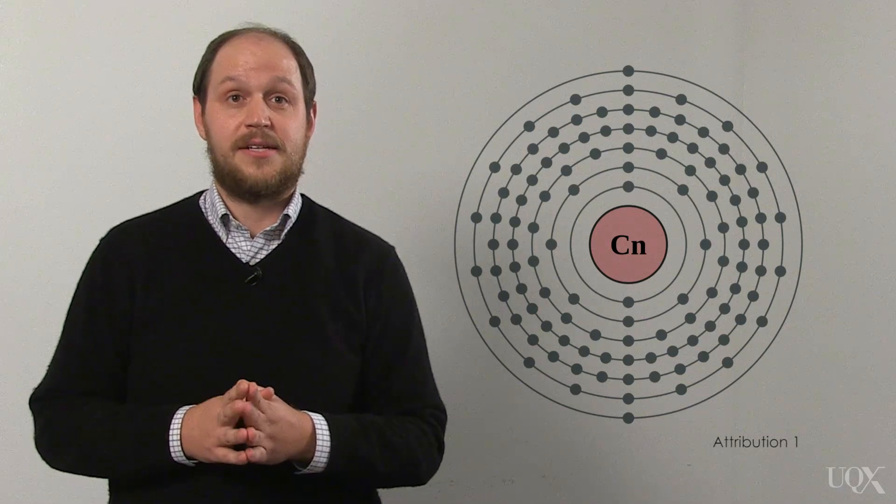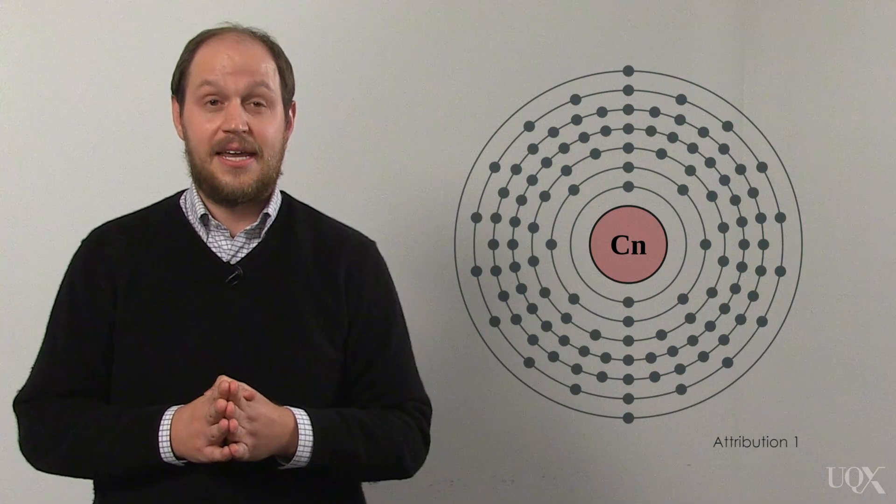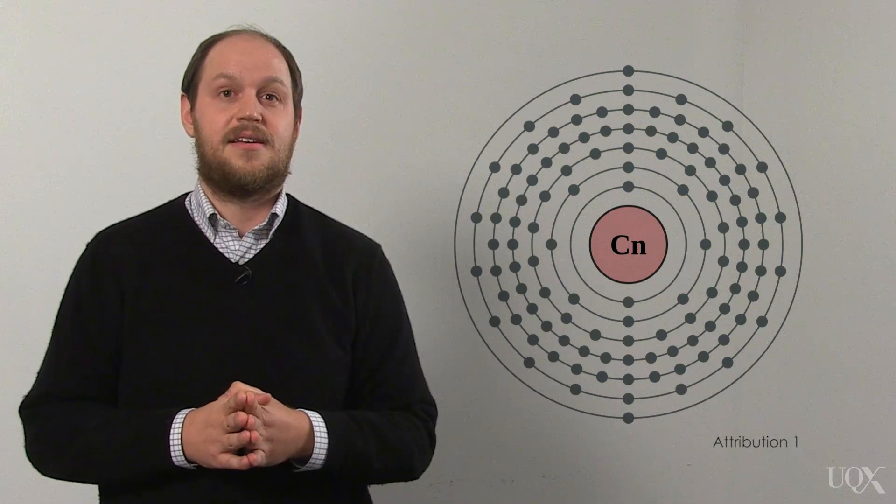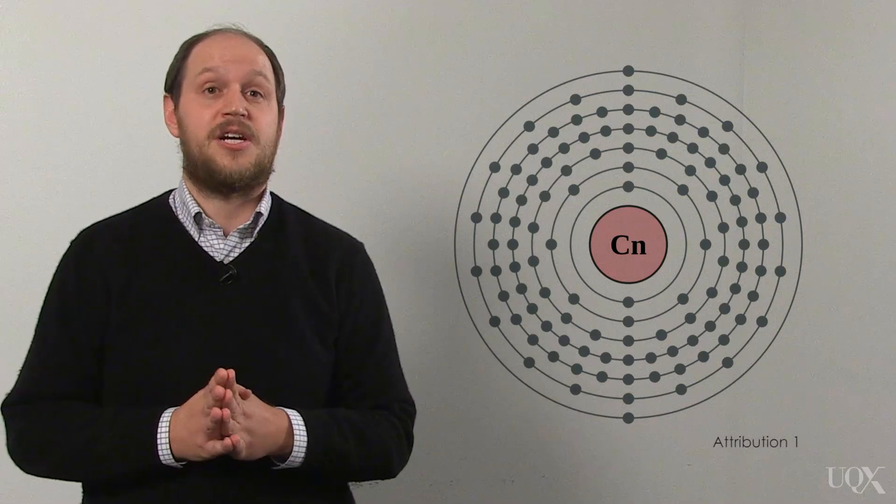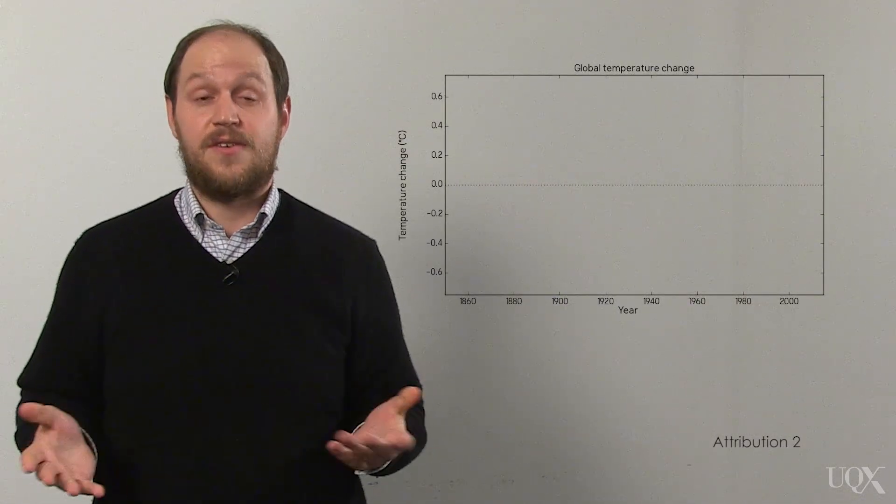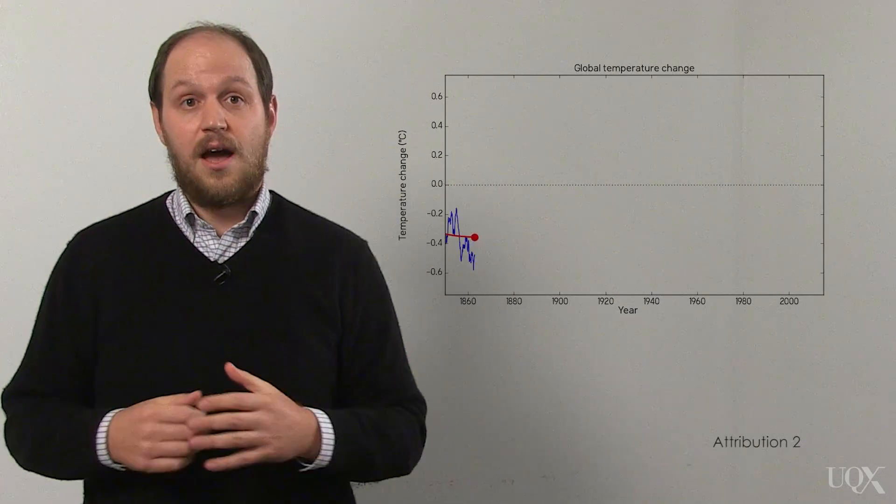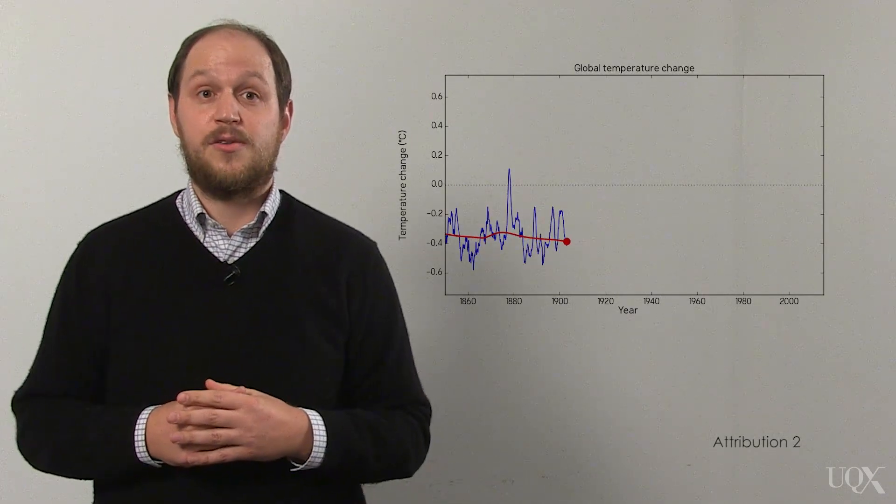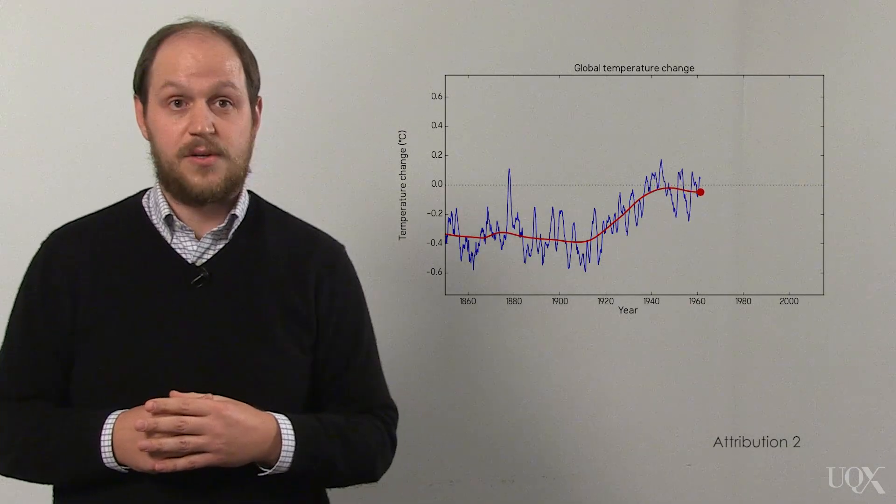Copernicium is a very radioactive element and is unstable. It has a half-life measured in seconds, but it's a powerful demonstration that humans are capable of changing the world around them. Some of these changes, like the creation of Copernicium, are fleeting. Others, like the way we're changing the Earth's atmosphere and climate, can shape the world far into the future.